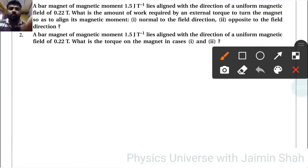A bar magnet of magnetic moment m = 1.5 J/T lies aligned with the direction of a uniform magnetic field B = 0.22 T. What is the amount of work required by an external torque to turn the magnet so as to align its magnetic moment normal to the field direction?